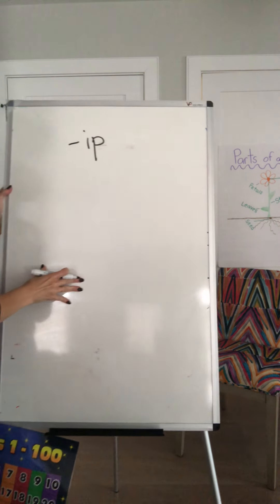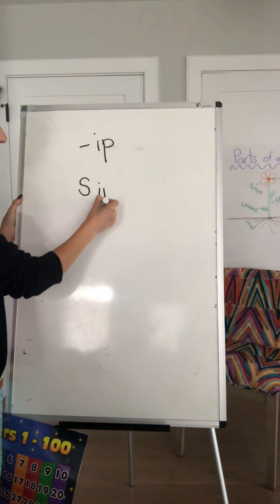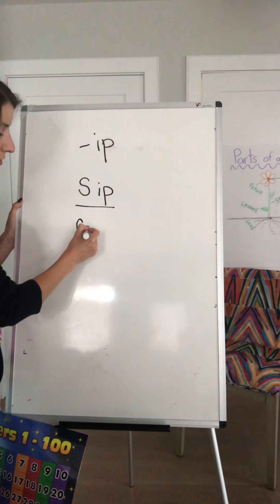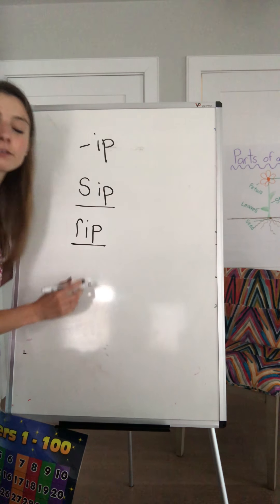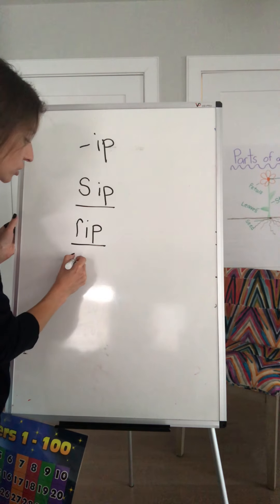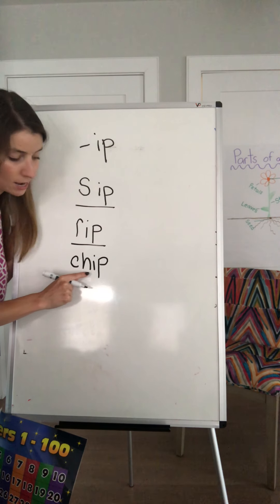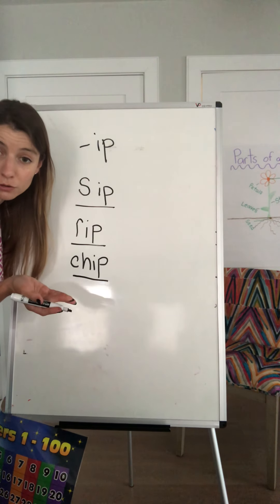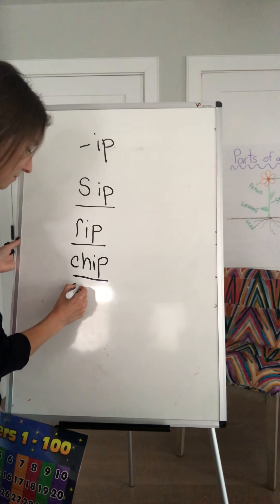If. What about sip? -ip. Sip. Rr-rip. Remember that tricky one with the digraph? Those two letters that make one sound — Sh. -ip. Ship. Good job. Sh. -ip. Ship. There's another digraph one with S and H. What sound do those two letters make when they're together? Sh. Ship. Good job.